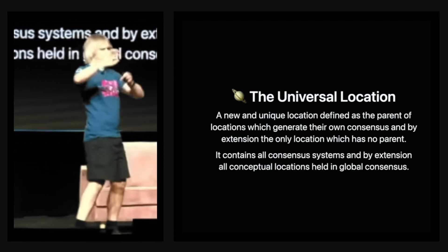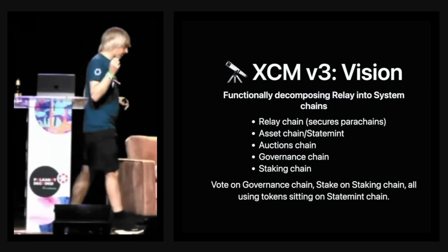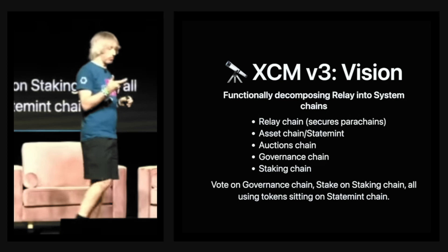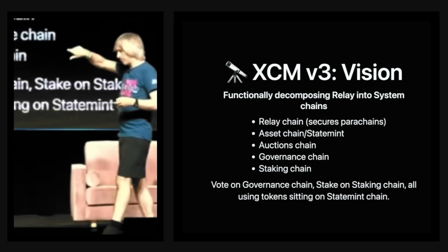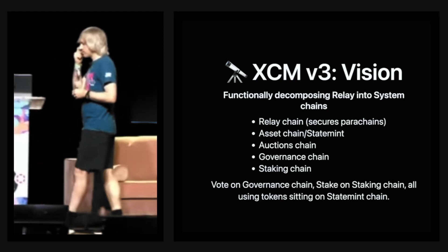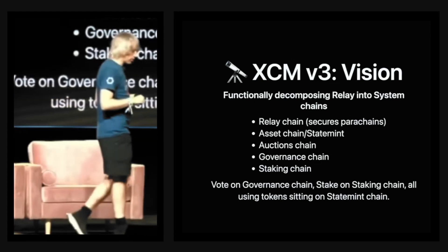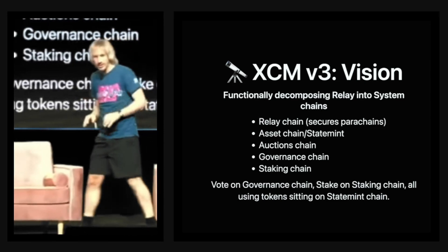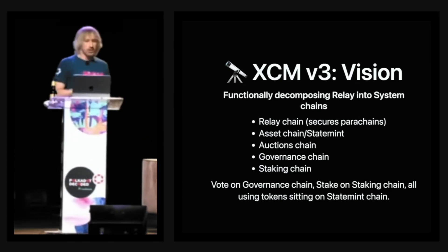This concept of a universal location conceptually sits above consensus systems and will eventually allow for bridging outside Dot-Sama using XCM. The first and most important thing is the functional decomposition of the relay chain — the goal is to make the relay chain do what it's named after: managing parachains, acting as a central point for securing them and passing messages between them. This means it really shouldn't be managing governance, validator-nominator relationships, or moving tokens between accounts.